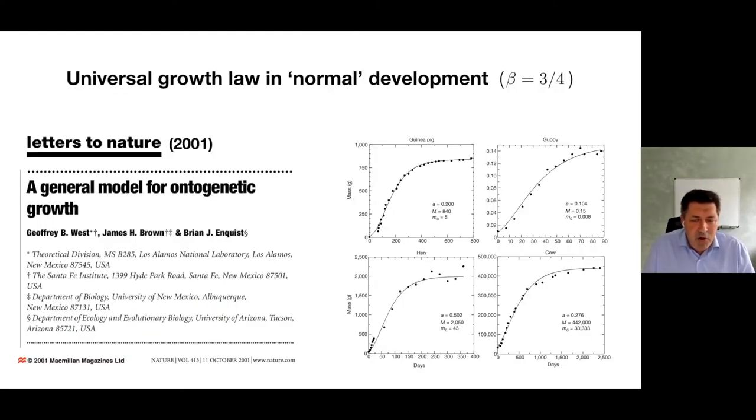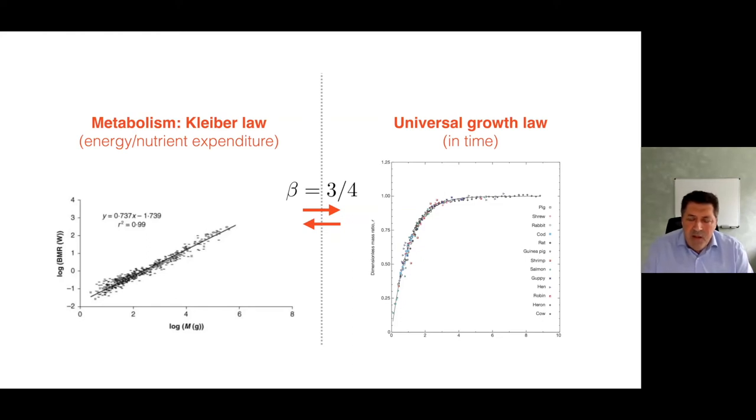It's very interesting that both things are connected. The exponent beta in the allometric scaling law relating metabolism and size is the same exponent that appears in von Bertalanffy growth law. In this very nice paper published in Nature by West, Brown, and Enquist, they proved that if you get the well-known Kleiber law with three-quarter exponent, you get a growth law in time from birth to adulthood for different animals. It really fits nicely available data. There's a connection between metabolism and growth. If you have Kleiber law, you get a universal growth law in time.